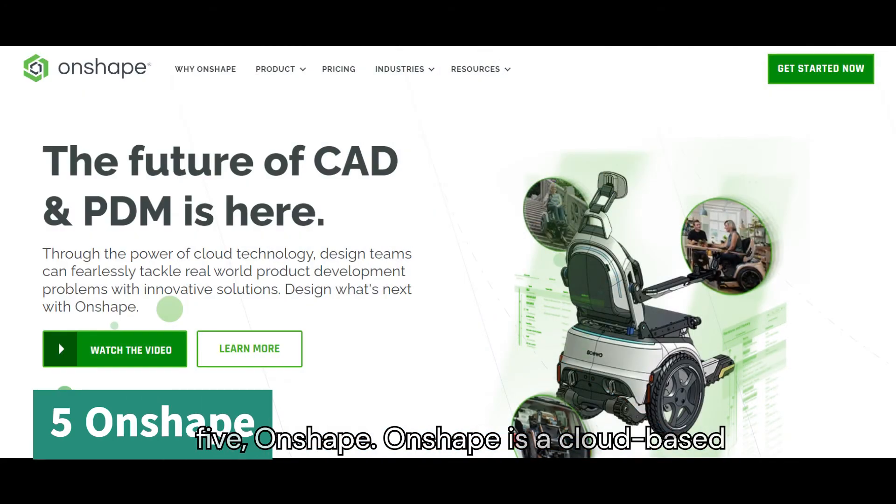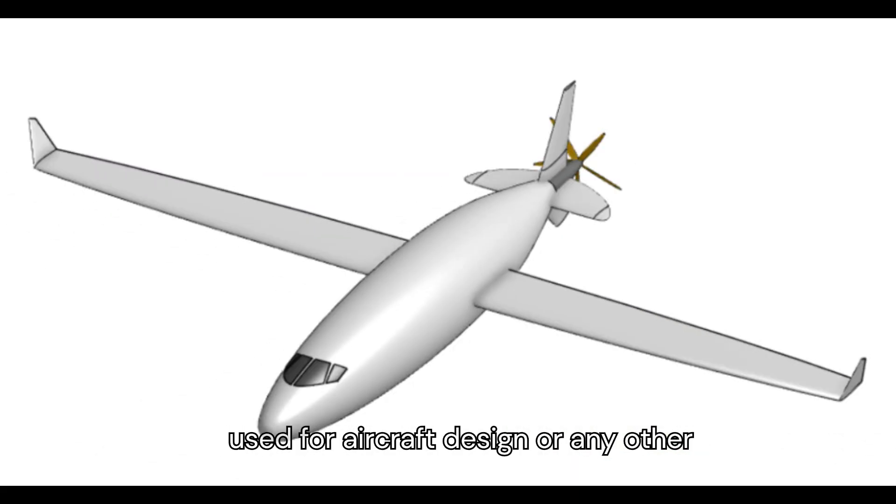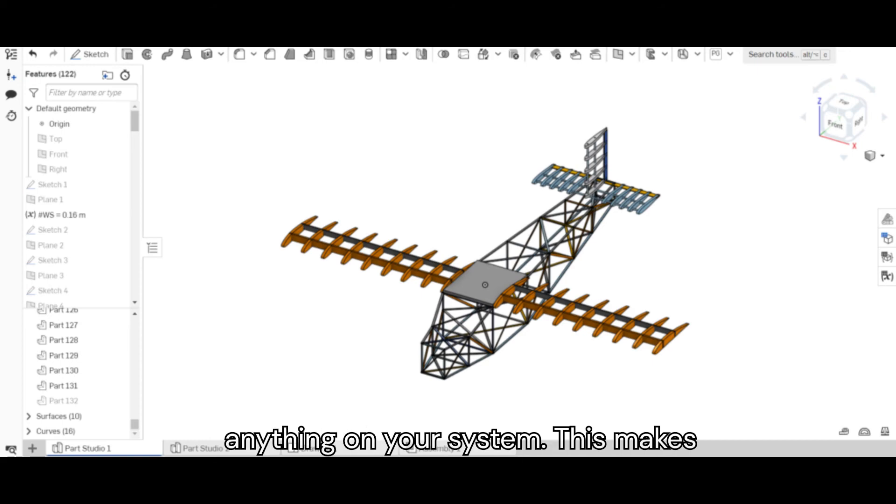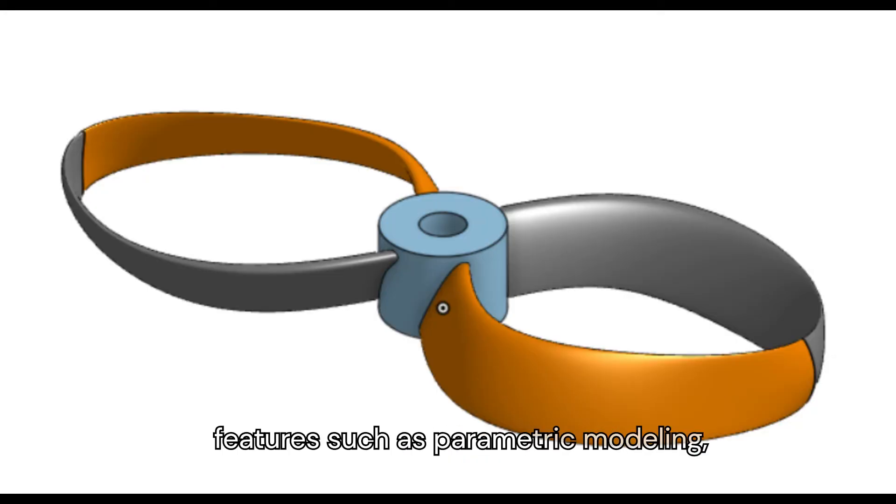Number 5: Onshape. Onshape is a cloud-based 3D modeling software tool that can be used for aircraft design or any other design. You don't need to download anything on your system, which makes Onshape fast and easily accessible across devices. It includes features such as parametric modeling, collaboration tools, and version control.